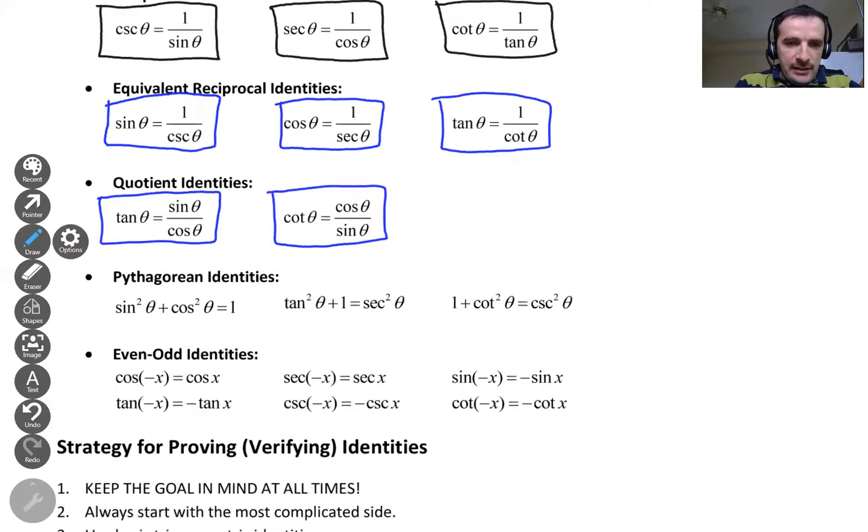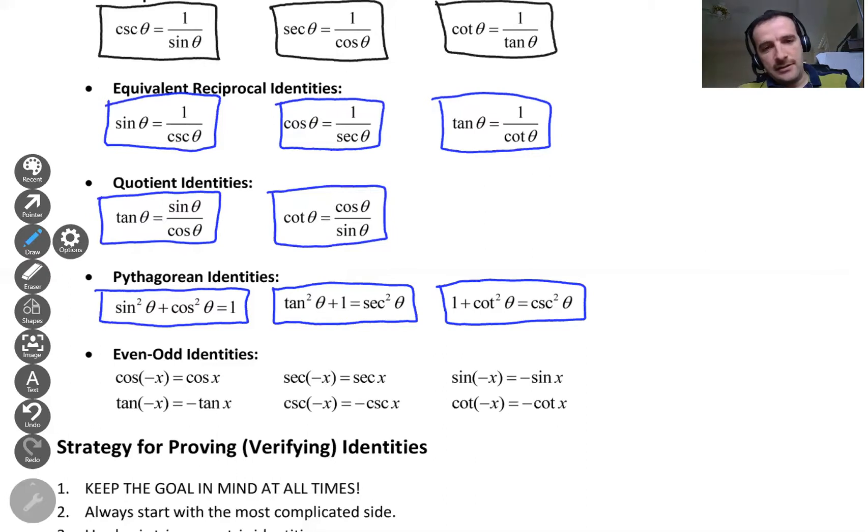And now what about the Pythagorean identities? Let me remind you them as well. Of course, the most important one is sine squared plus cosine squared is equal to 1. The next one is tangent squared plus 1 is equal to secant squared. And 1 plus cotangent squared is equal to cosecant squared. And actually, the second and the third one is coming from the first one.